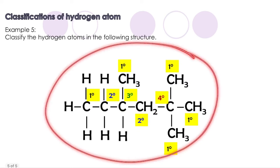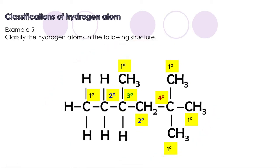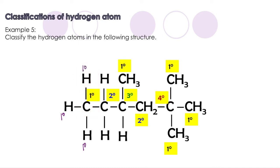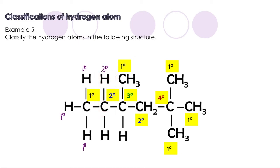Let's take a look at Example 5, which is based on Example 4. In this slide, the classification of carbon atoms is already labeled. This hydrogen is attached to a primary carbon, so it is a primary hydrogen. The same goes for this one and this one — both hydrogens are attached to primary carbons. That hydrogen is attached to a secondary carbon, so it is a secondary hydrogen, and the same applies to this one.